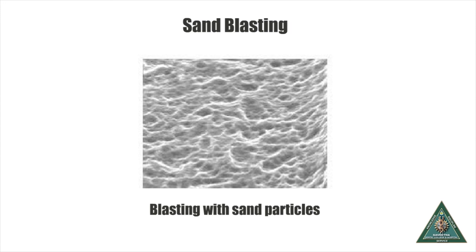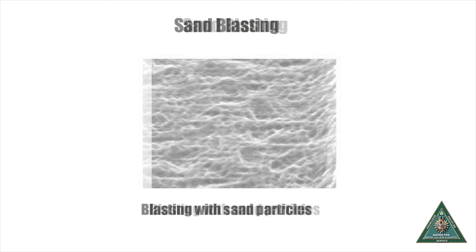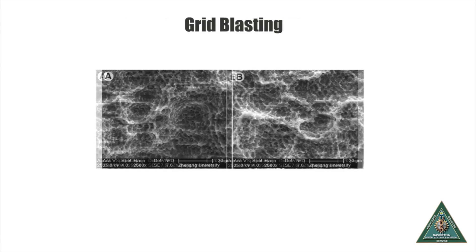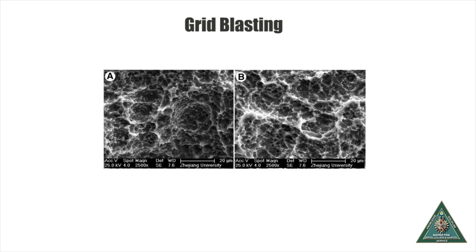Since alumina is toxic, it is no longer used. Astratech uses titanium-blasted surfaces called TiOblast. Grit blasting is a procedure of blasting much larger particles to get coarse surfaces. Since osteoblasts require a roughness of 100 to 200 microns to interact with the implant, we should be more cautious of claims from new companies trying to sell nano-surface implants.